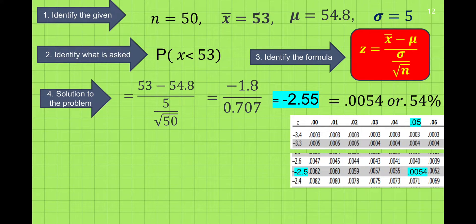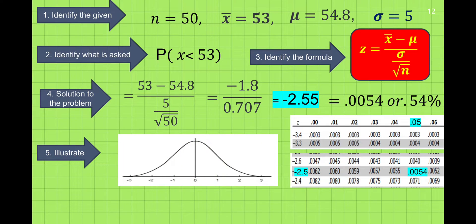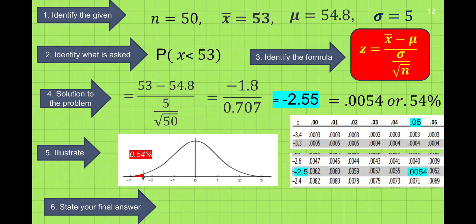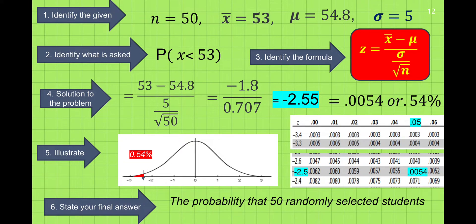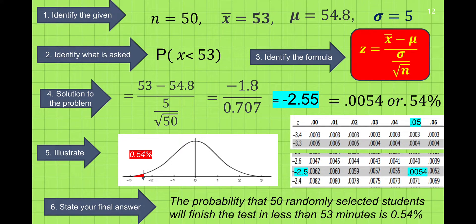That is also equal to 0.54%. The fifth step is to illustrate using the normal curve. We locate negative 2.55, which is between negative 3 and negative 2, and find the area, which is also equal to 0.54%. For the sixth step, we state the final answer: the probability that 50 randomly selected students will finish the test in less than 53 minutes is 0.54%.